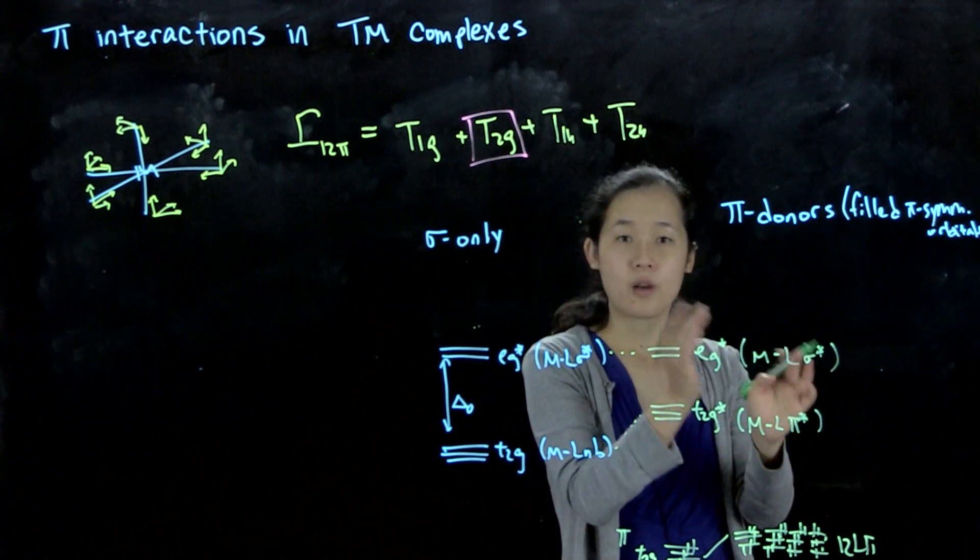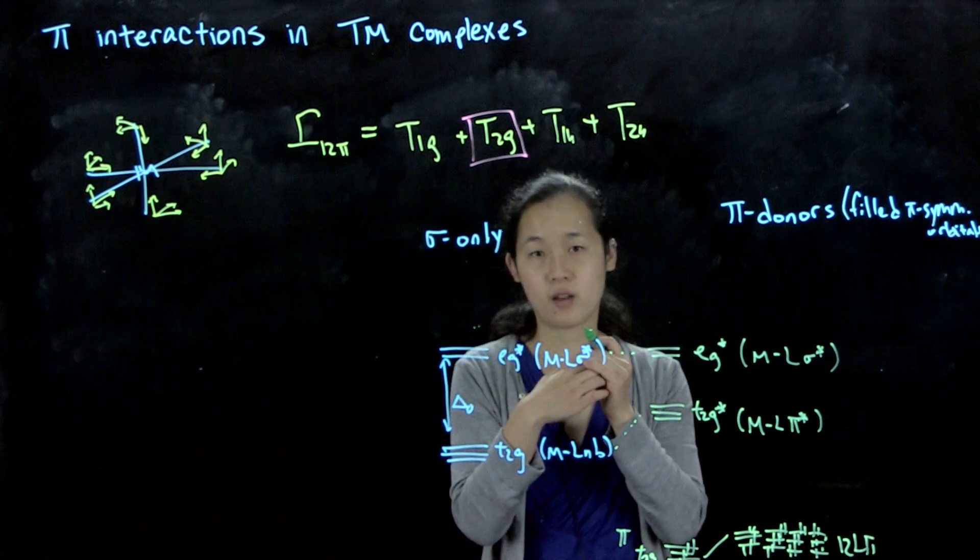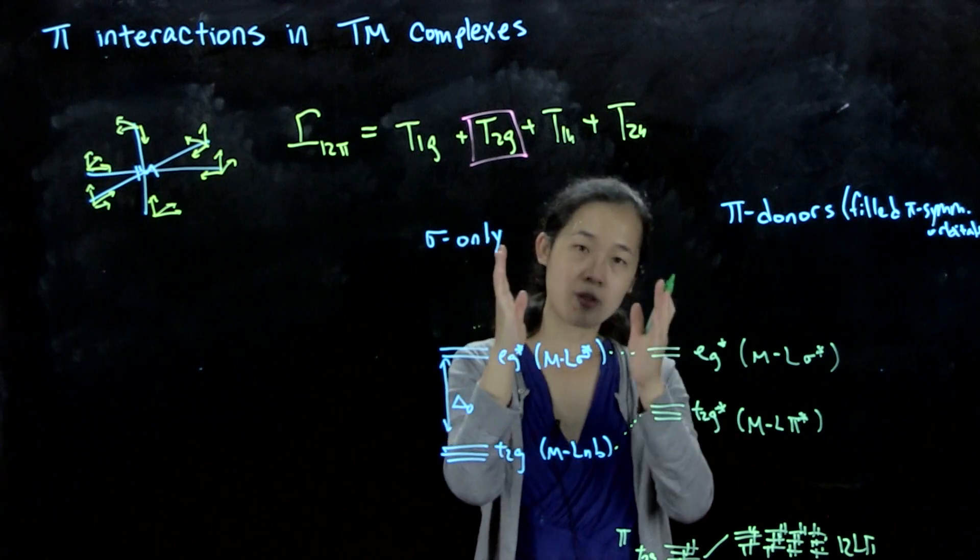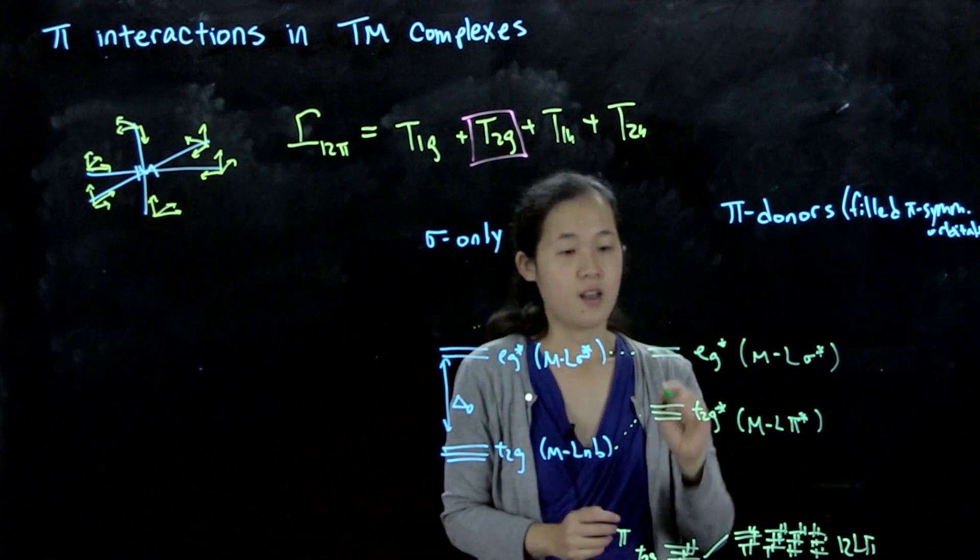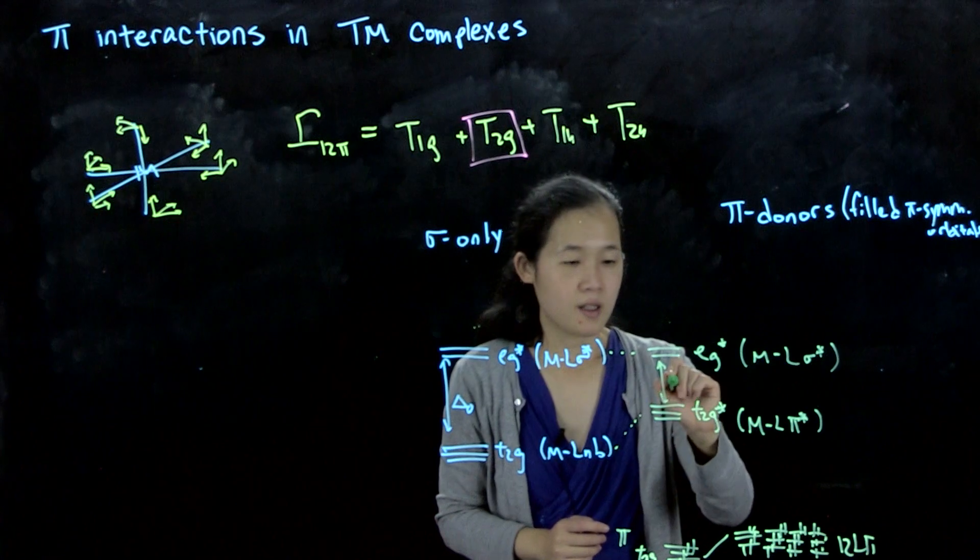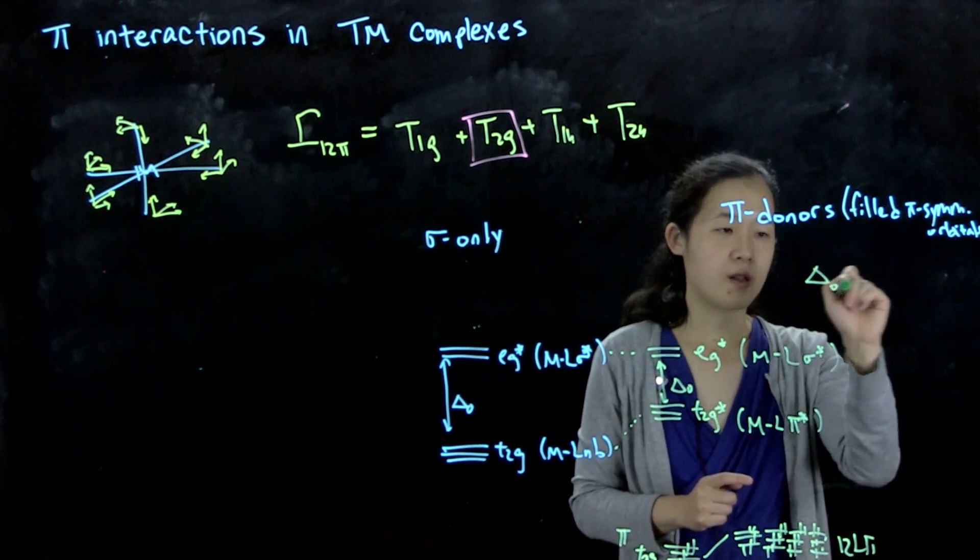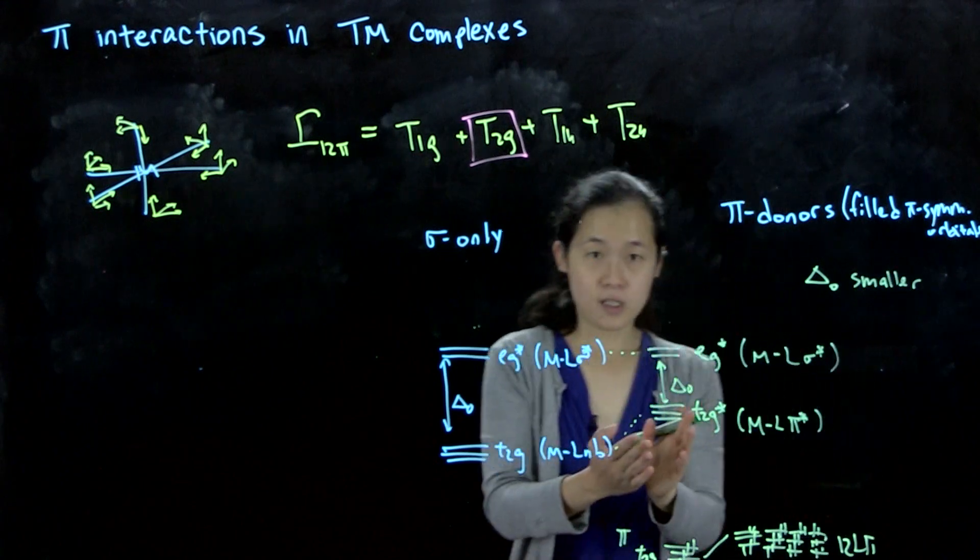The T2G never crosses over with the EG orbitals, because the sigma interaction, like we talked about before, is always stronger than the pi interactions, because there's better overlap in the sigma nature compared to the pi. We have parallel pi orbitals, or pi-symmetry orbitals. There's less overlap. This anti-bonding is less. The key point is here, delta O. So for pi-donors, delta O is smaller. This is because our T2G goes up in energy.